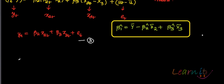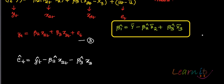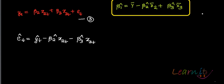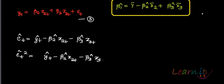From this equation, you can get the estimate for e hat, which is: y hat t minus beta 2 hat x2t minus beta 3 hat x3t. So e hat t squared would be: y hat t minus beta 2 hat x2t minus beta 3 hat x3t, whole squared. Summing both sides gives you equation 4.